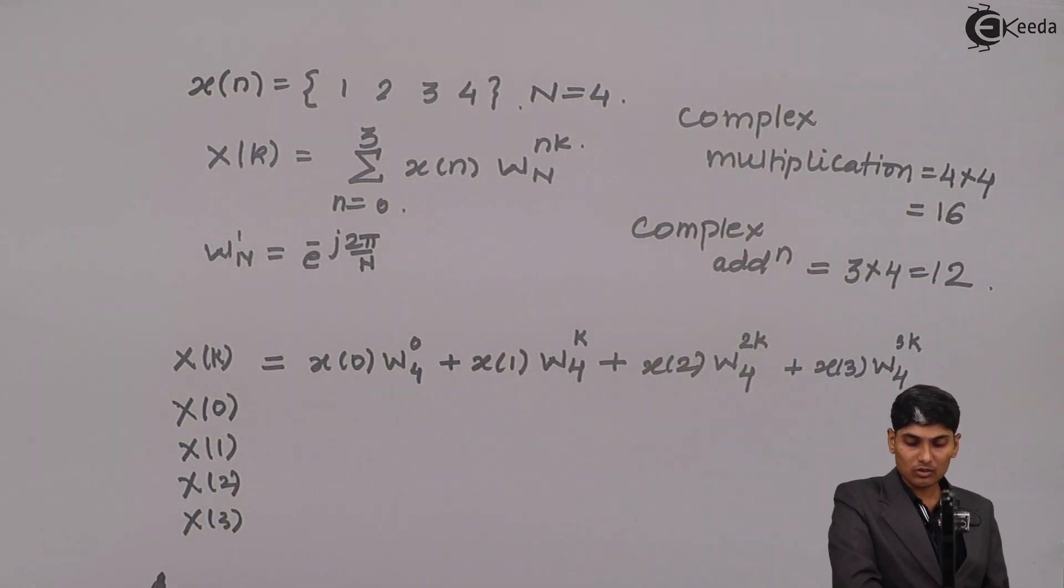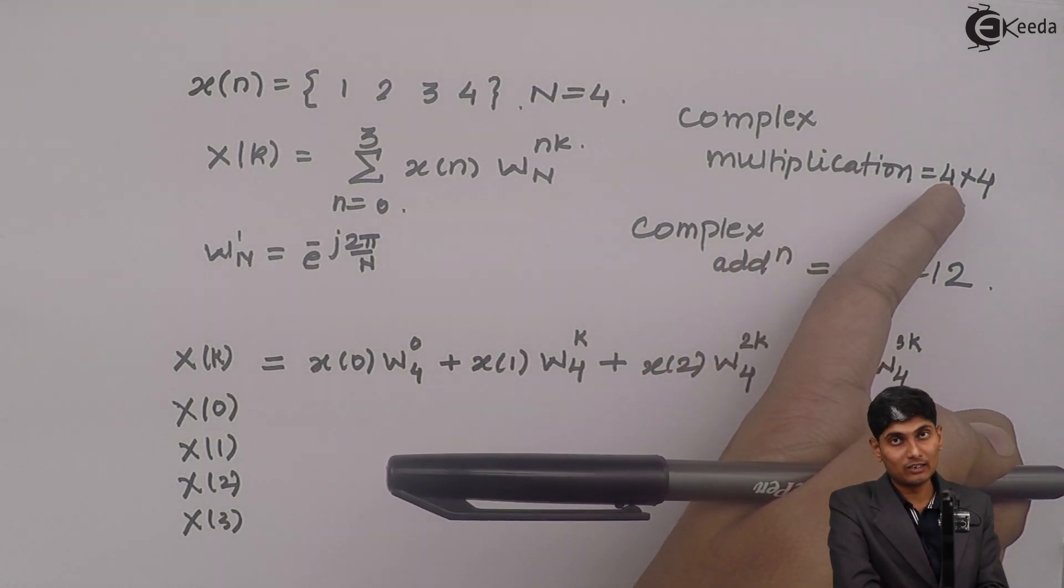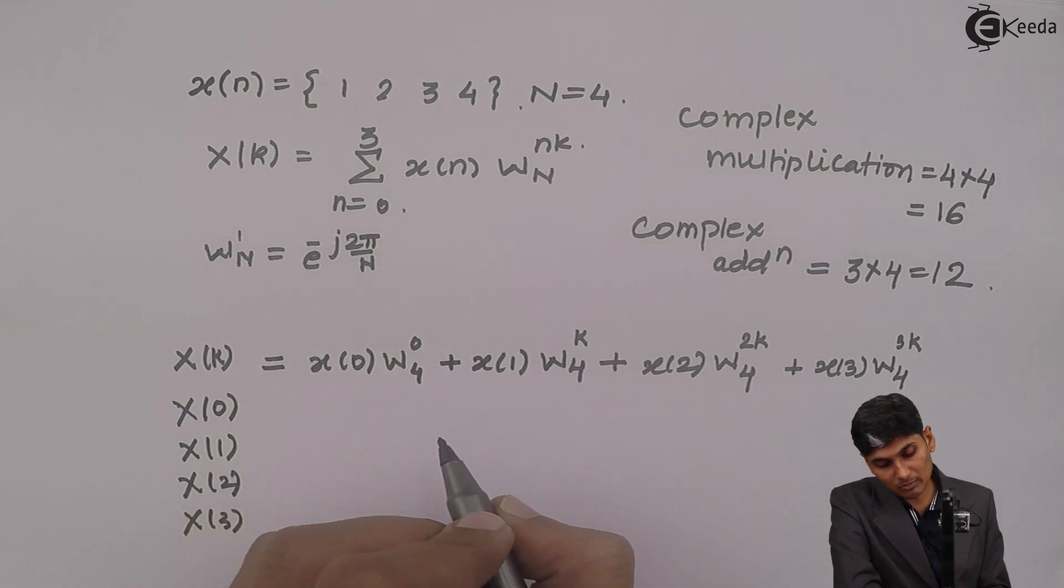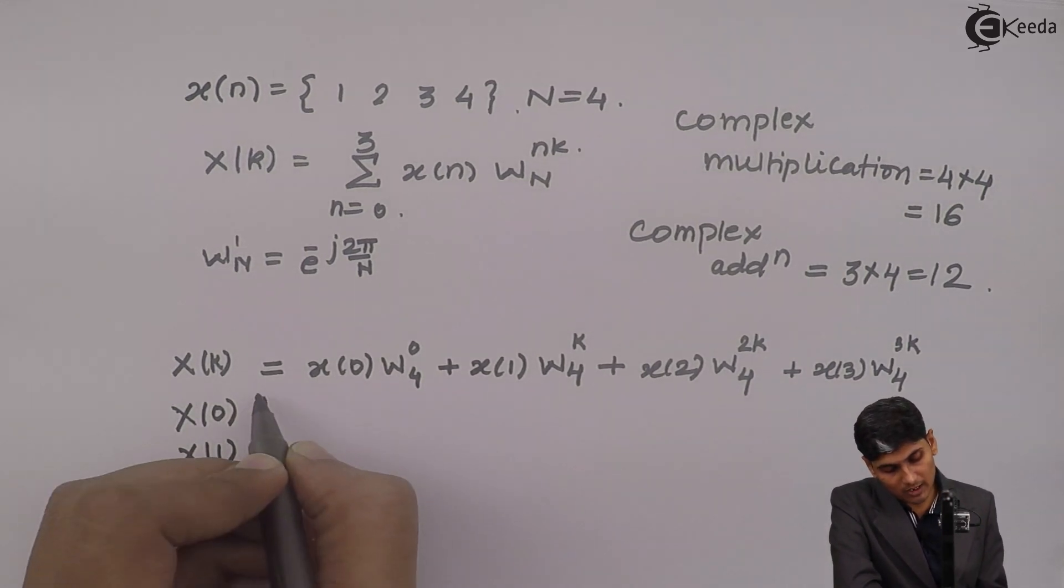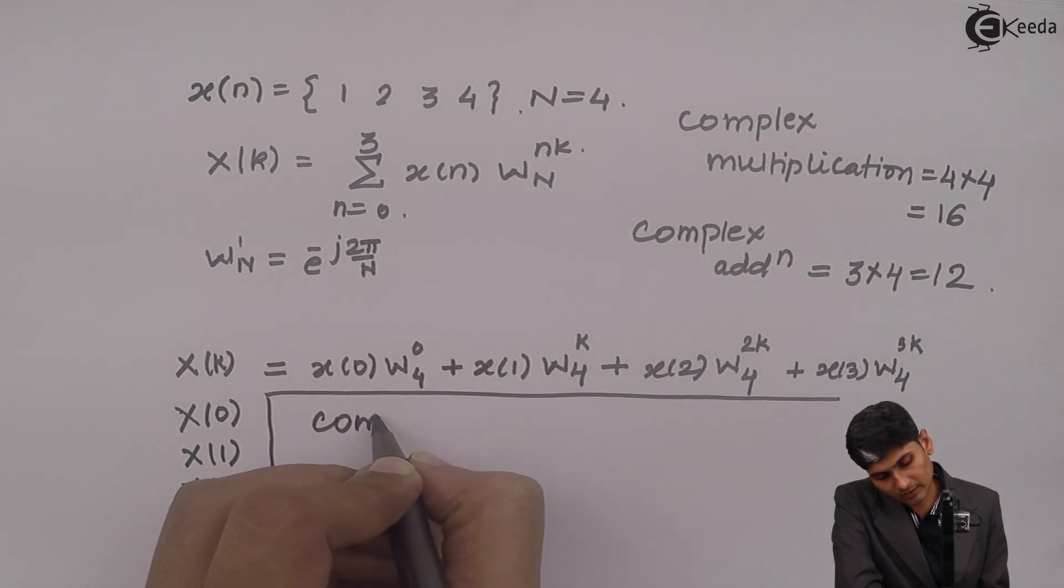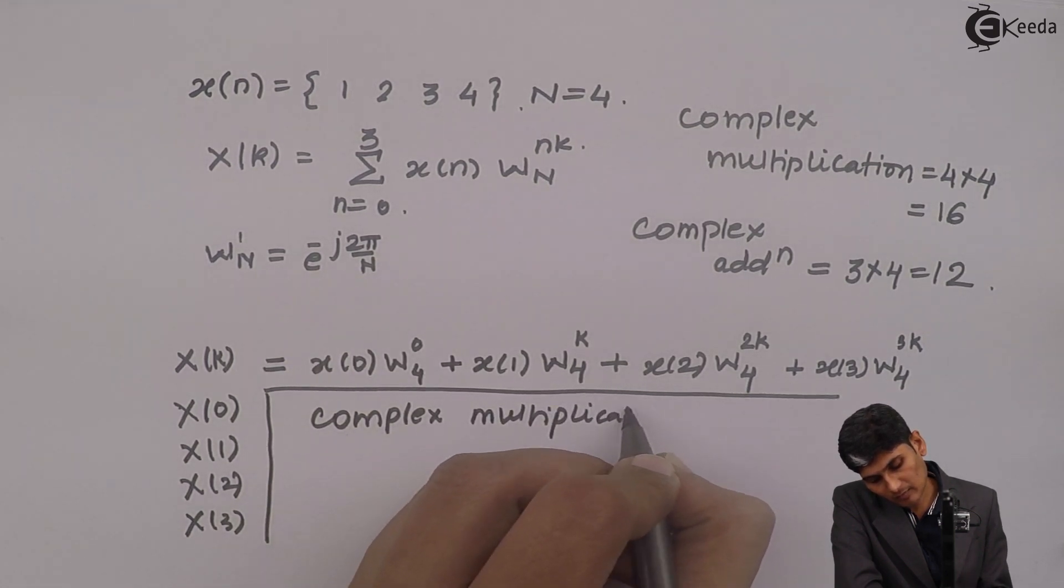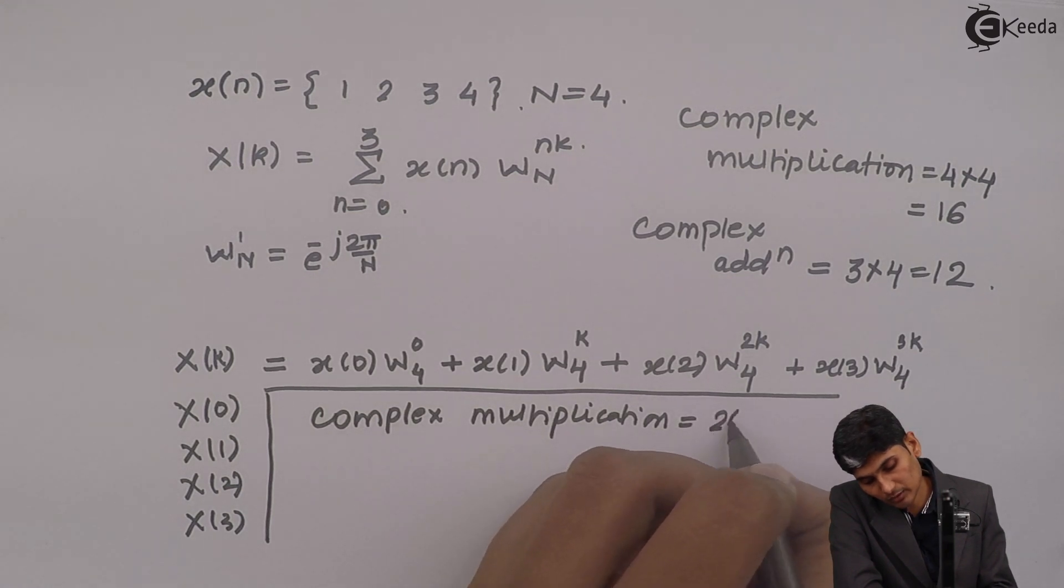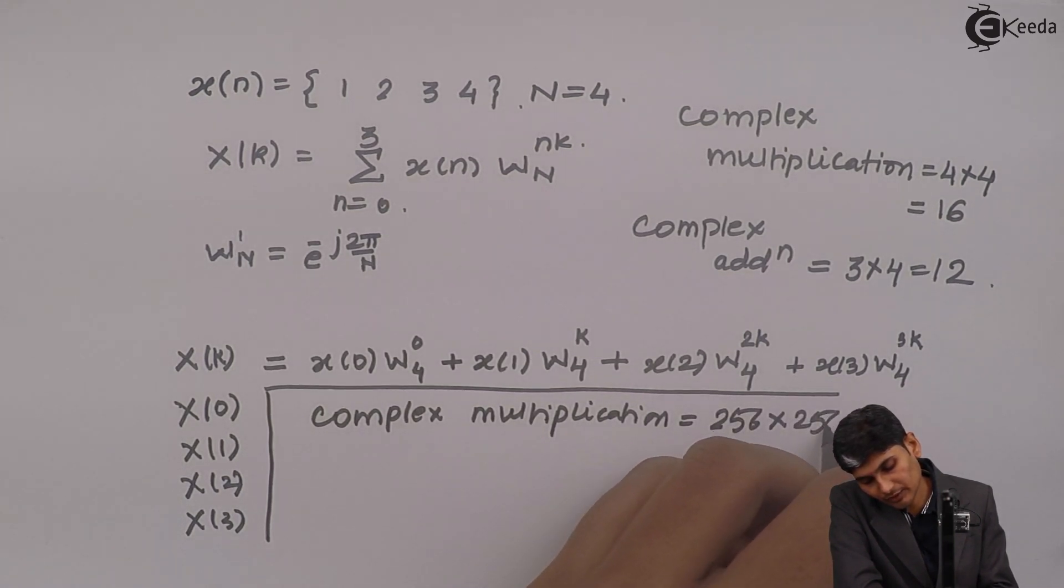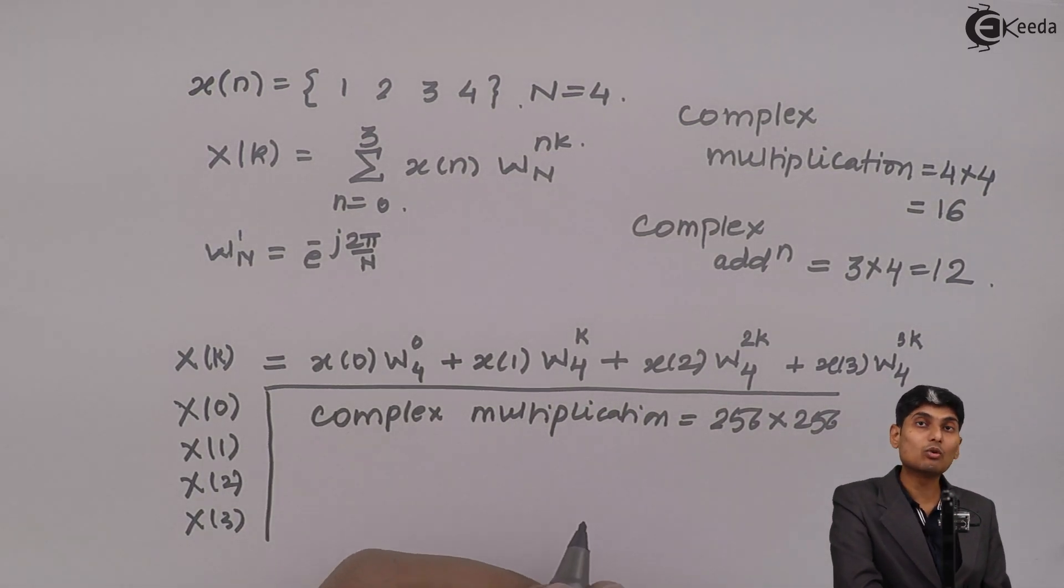So this was only for 4-point DFT. If suppose I take an image and that image is having suppose 256 total points, then the same sequence is now 256 of size. My capital N value is 256. So if suppose I extend this idea and generalize it, then now the complex multiplications will be 256 into 256, which is of course a very huge number.